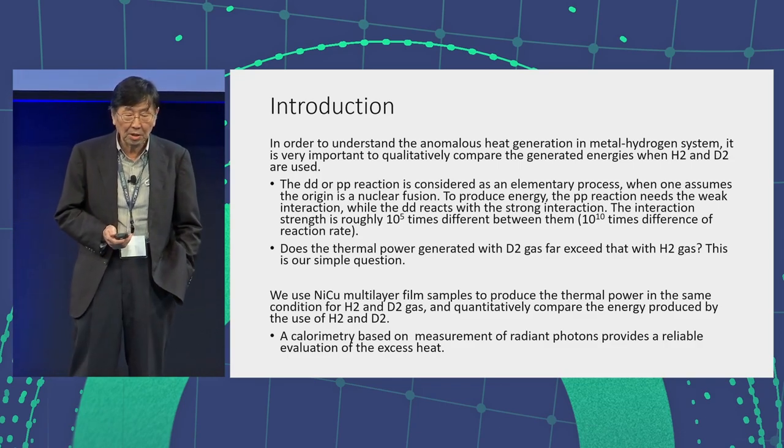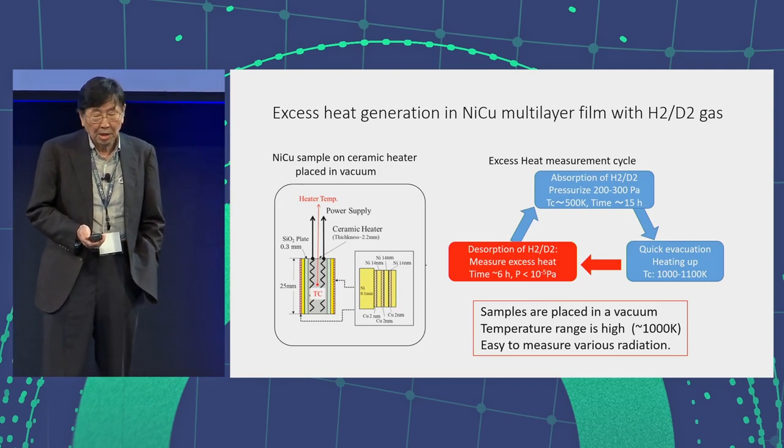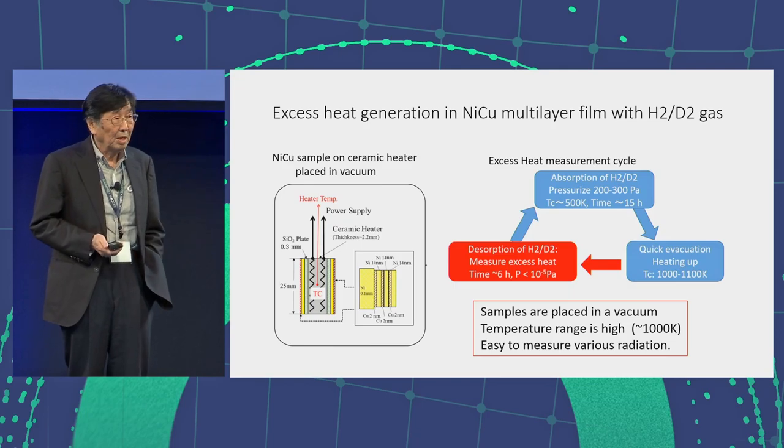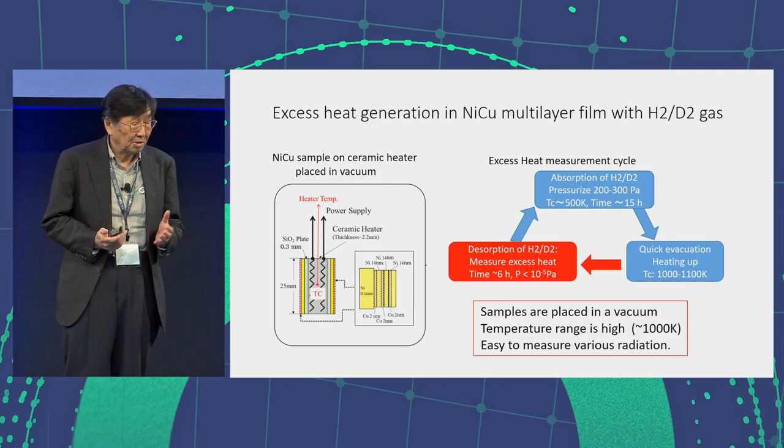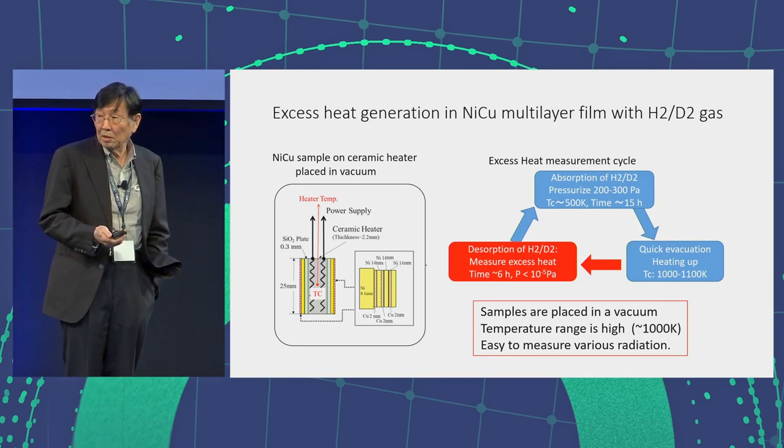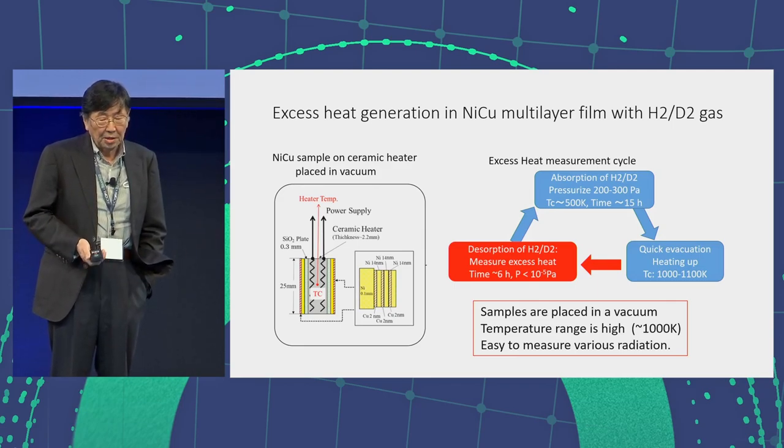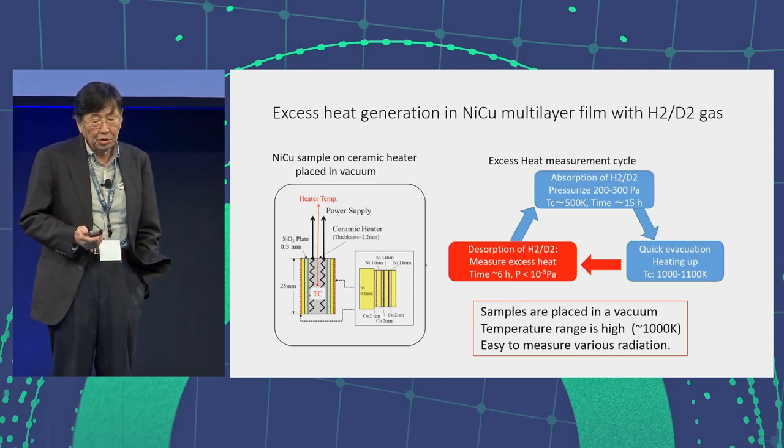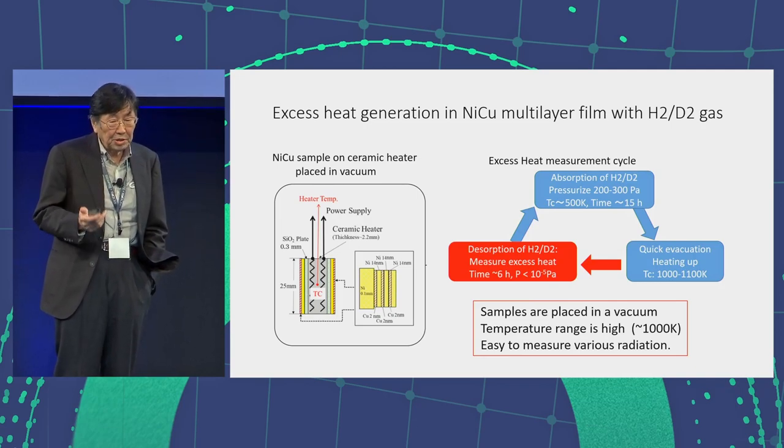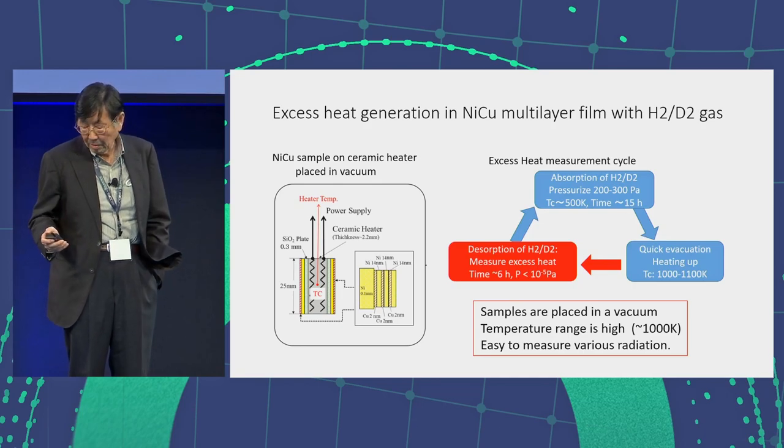Calorimetry based on the measurement of radiant photons provides a reliable evaluation of excess heat. This is our simple explanation for the heat-excessive generation energy using nickel copper multilayer film. Our group gave three talks including mine, and Iwamura-san and Ito-san already explained how to use the nickel copper multilayers. I just want to stress that our system samples are placed in a vacuum. The temperature range is very high, around 1000 Kelvin. The sample is inside in a vacuum. Therefore, it is easy to measure the radiation. That is our very advantageous point.